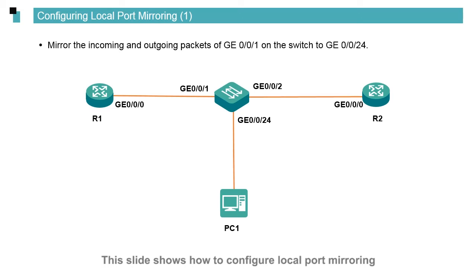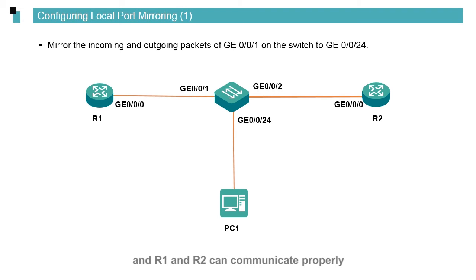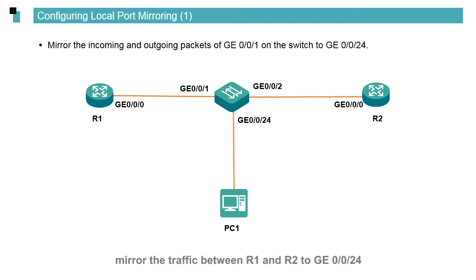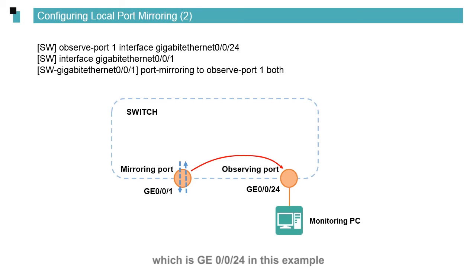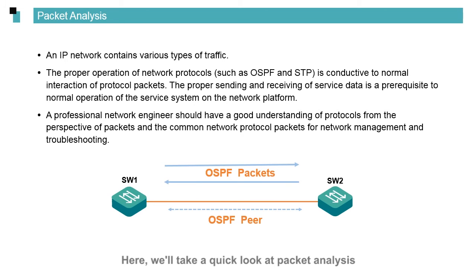This slide shows how to configure local port mirroring. The example assumes that a switch is connected to three devices and R1 and R2 can communicate properly. To monitor the data sent and received by the PC, mirror the traffic between R1 and R2 to GE0/0/24. We use the first command to specify the observing port, which is GE0/0/24 in this example. Then we specify a mirrored port.